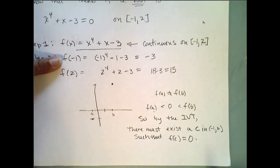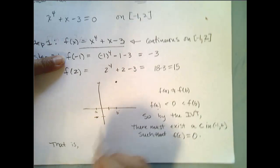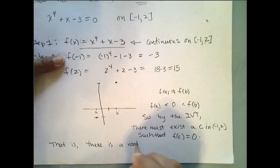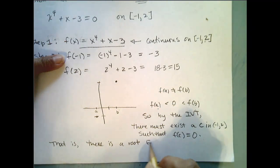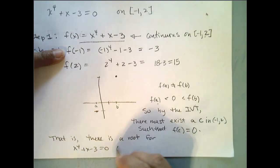So, what did we just show? We showed that there is a c somewhere between a and b, such that f of c is equal to 0. That is, there is a root for x to the fourth plus x minus 3 equals 0 on negative 1, 2.